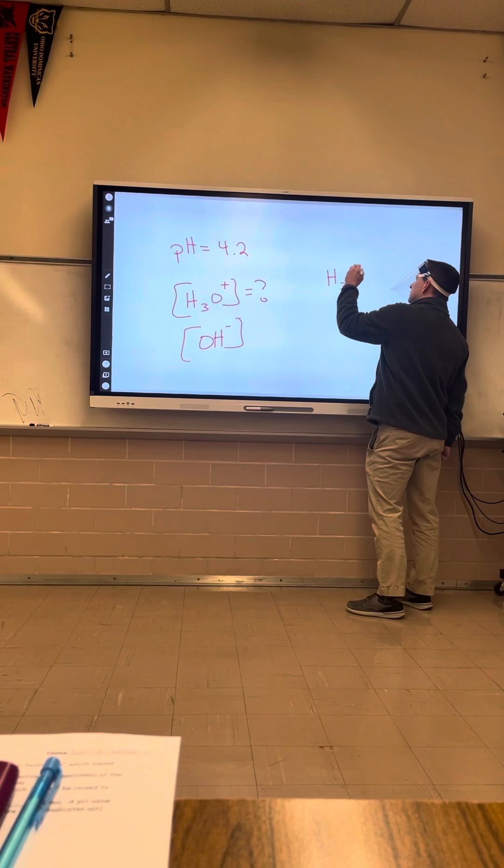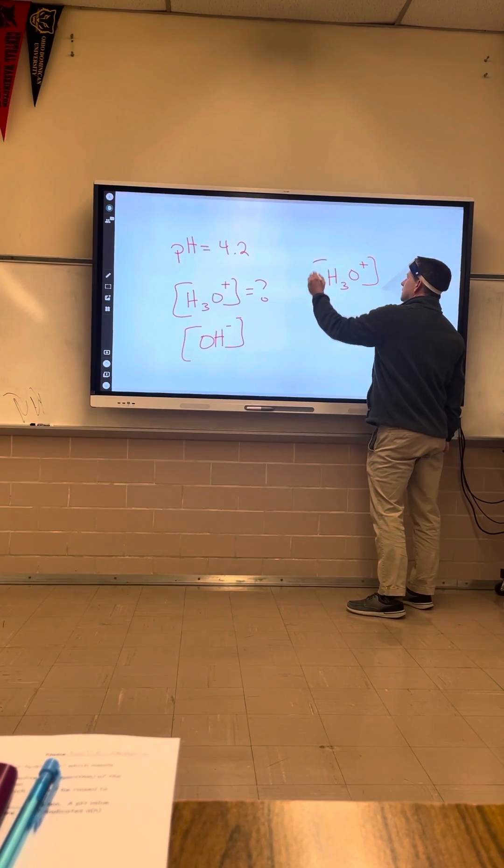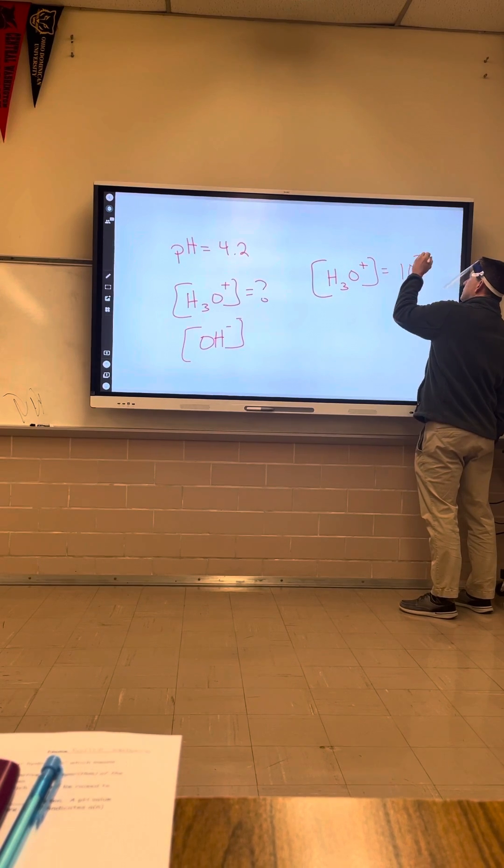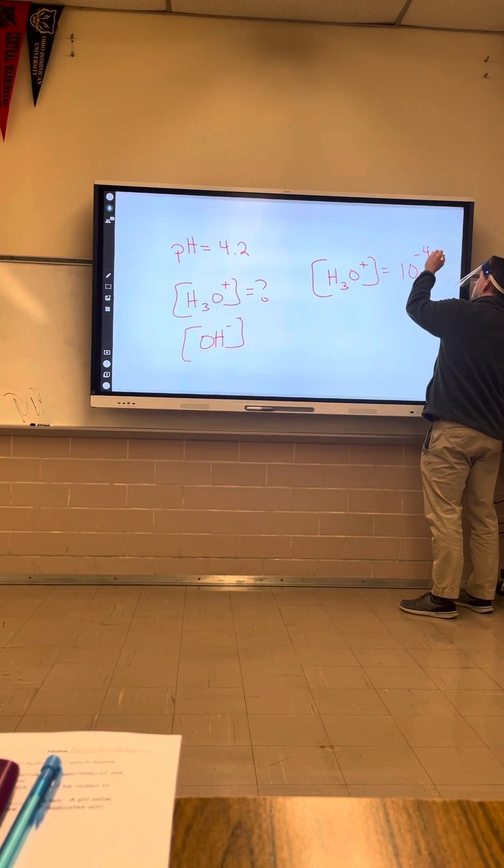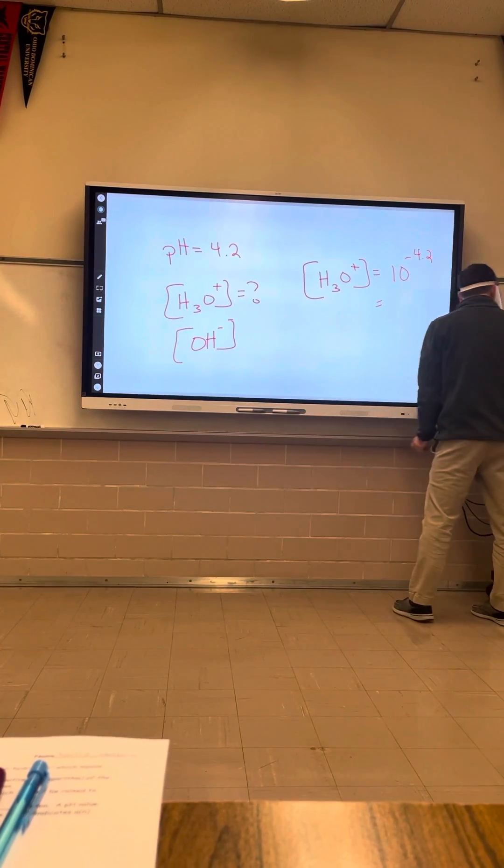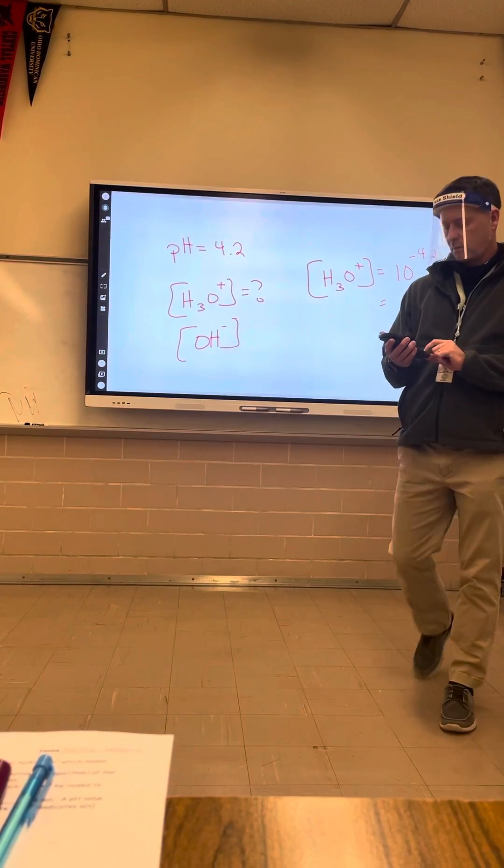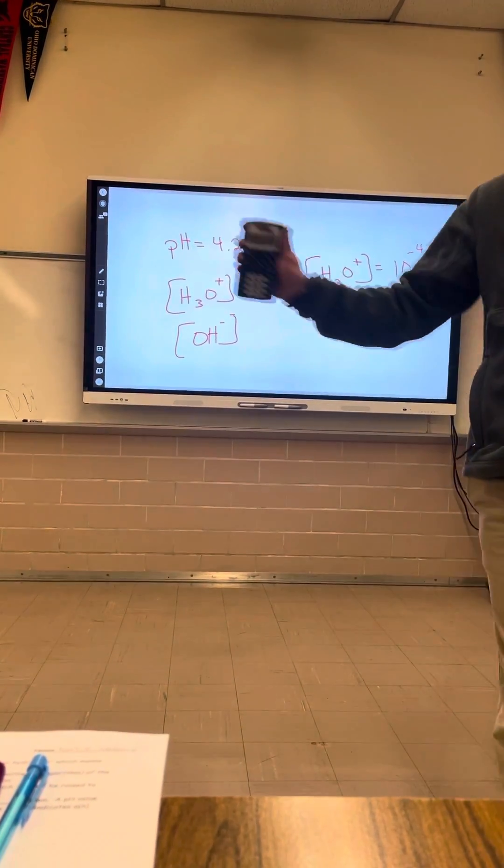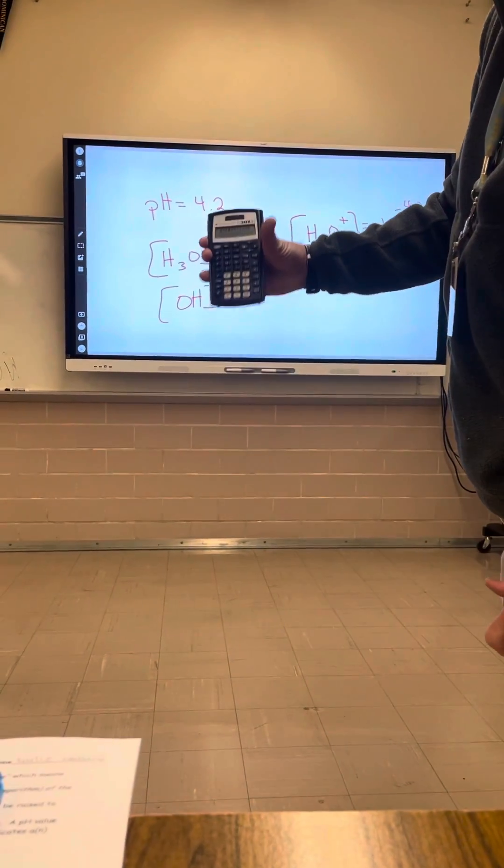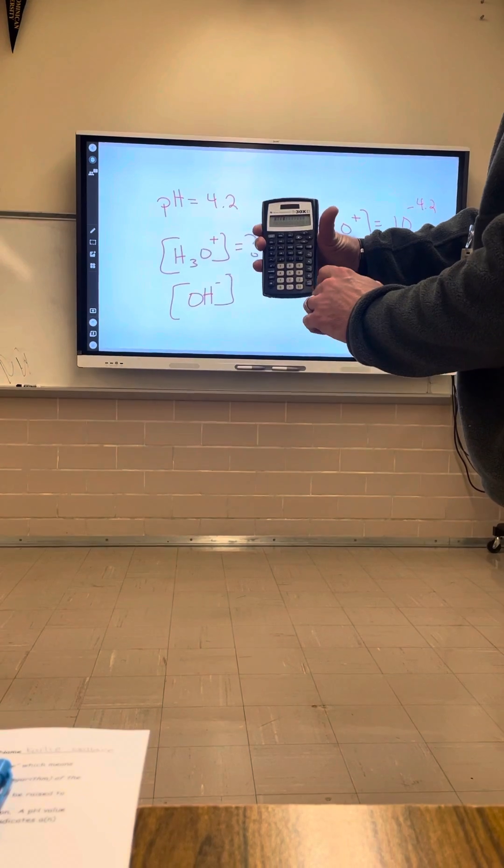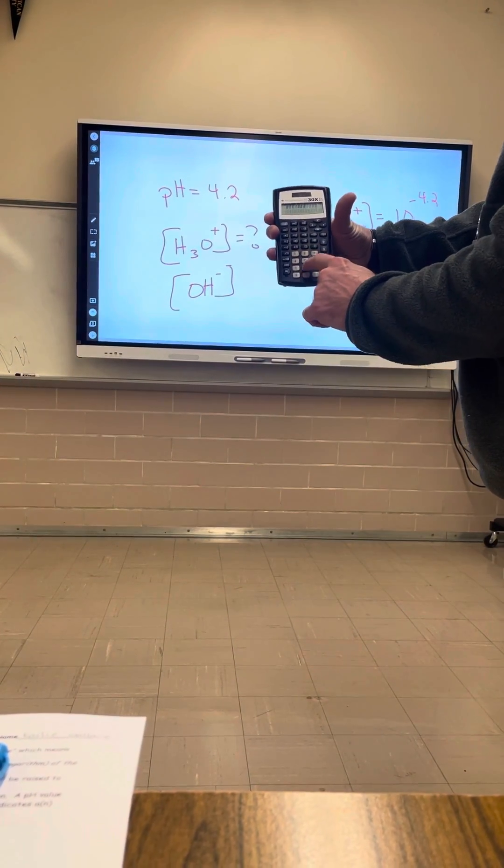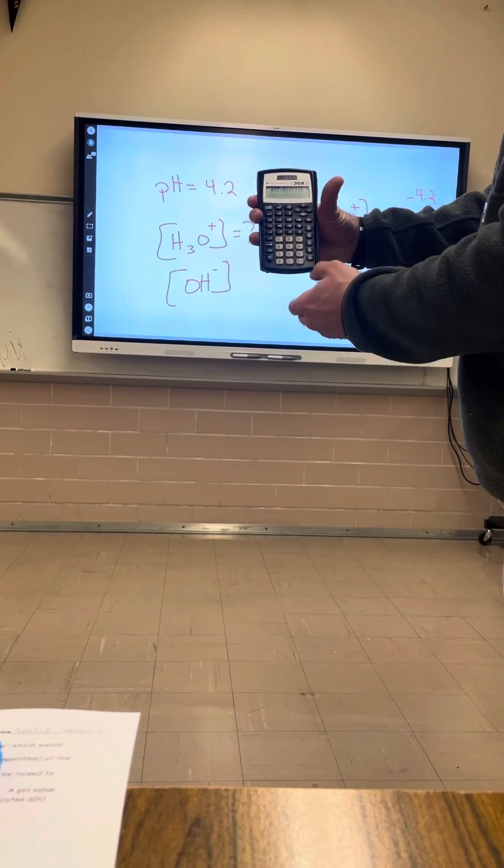H3O+ equals 10 to the negative 4.2. So I'll punch this in for you now. So you'll hit the second log negative 4.2. And this is how to do it on 30X2S.